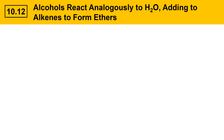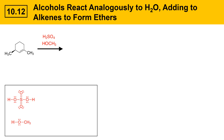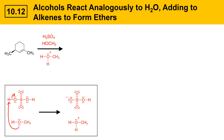Alcohols react analogously to water and lead to alkenes forming ethers. Here's an example: an alkene reacting with sulfuric acid and methanol. In the presence of this very strong acid, methanol gets protonated by sulfuric acid to give protonated methanol and hydrogen sulfate — these are the species reacting with the alkene. The alkene gets protonated by this species to give an intermediate carbocation.